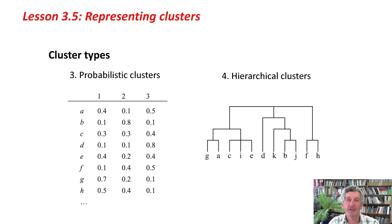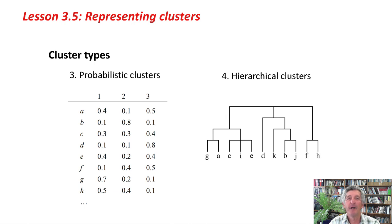Fourthly, we might have a hierarchical clustering method. Here the instances are along the bottom, and A and G get clustered together at the bottom level. Then these clusters join together at the next level up, and so on, until at the very top level all of the dataset is just one big cluster. This kind of tree is called a dendrogram.